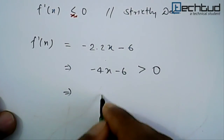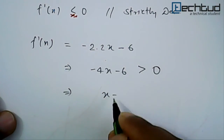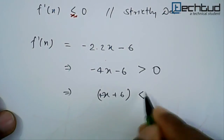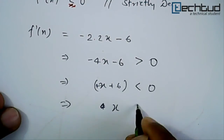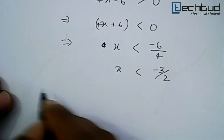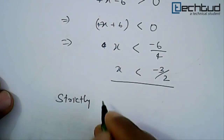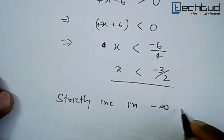For strictly increasing, this should be greater than 0. So minus 4x minus 6 is greater than 0. If we multiply both sides by negative, the inequality sign will change, giving us 4x plus 6 less than 0. So x should be less than minus 6 by 4, that is x less than minus 3 by 2. So the function is strictly increasing in the range minus infinity to minus 3 by 2.